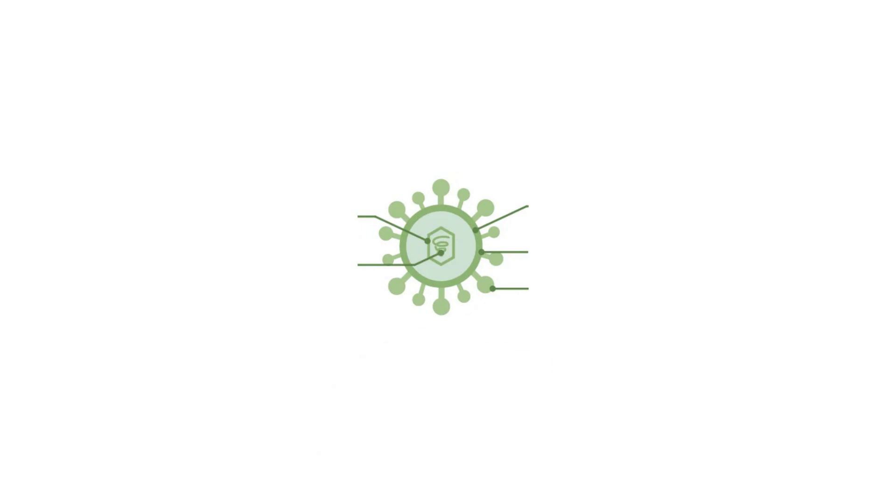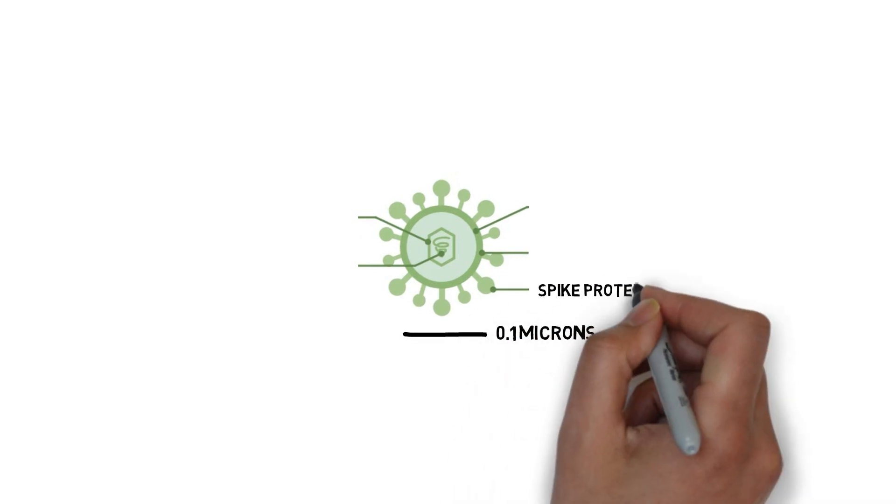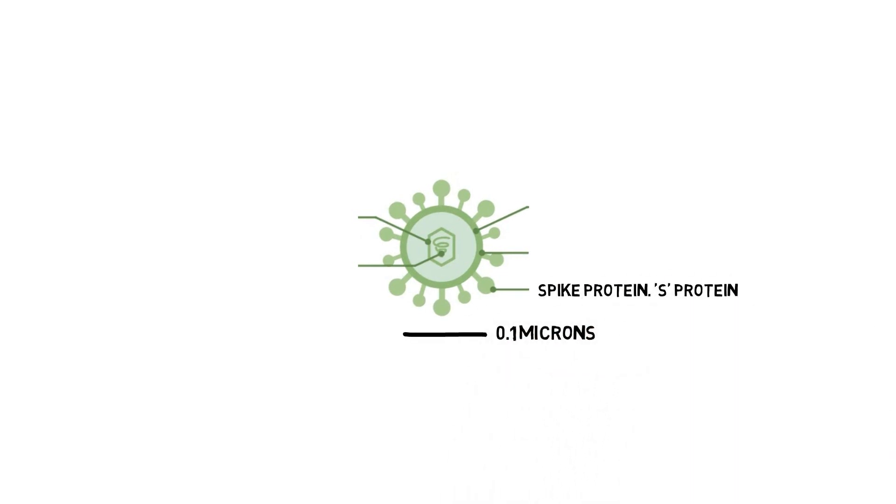SARS-CoV-2 is an envelope virus with a diameter of roughly 0.1 microns. On the exterior of the viral particle we have spike proteins, known as the S protein, which has high affinity for ACE2, an enzyme attached to the exterior of cells located in the lungs, heart and kidneys.